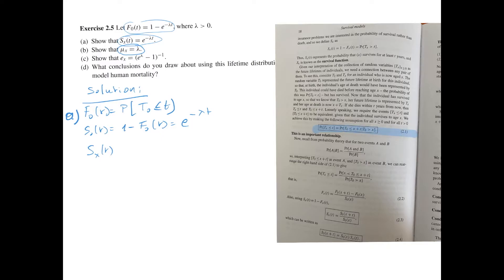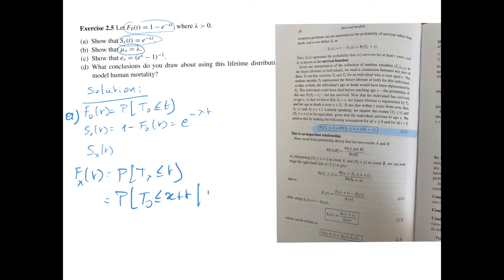Expression 2.1 tells us that we can connect tx with t0 as follows: the distribution function of an x-years-old, fxt, is equal to the probability that tx is less than or equal to t, which we can write as the probability that t0 is less than x plus t, given that t0 survives until x-years-old.